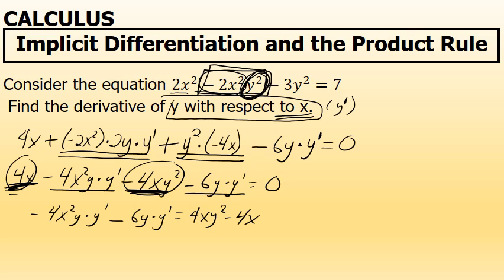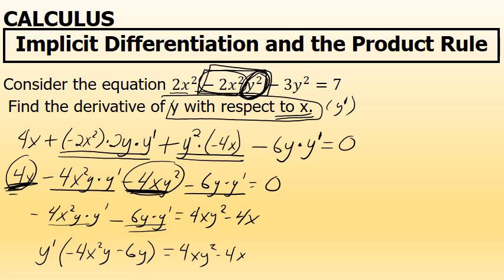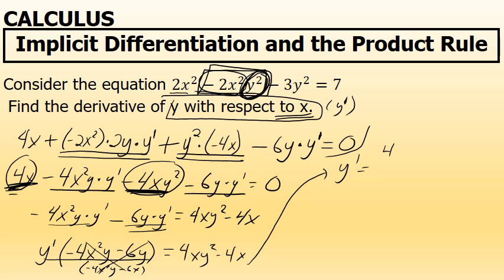Once the terms that involve a factor of y prime are on the same side of the equation, notice there's a common factor of y prime. I'll factor that out to get y prime times the quantity negative 4x squared y minus 6y, and that equals 4xy squared minus 4x. I can then divide both sides by the quantity negative 4x squared y minus 6y to isolate y prime, giving y prime equals 4xy squared minus 4x, all over negative 4x squared y minus 6y.